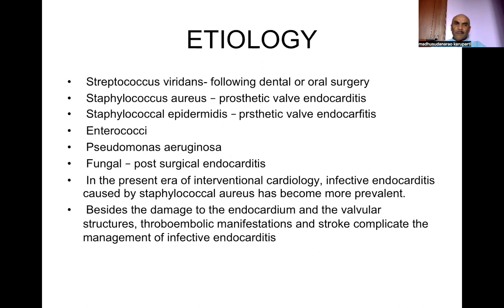What are the etiological factors? Streptococcus viridans is supposed to be the most common organism responsible for endocarditis. It usually occurs following dental surgery in individuals with poor oral hygiene — for example, a diabetic person with poor oral hygiene is always at risk of developing endocarditis, even without an organic valvular lesion. It can affect normal valves in scenarios where risk factors are present.